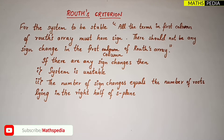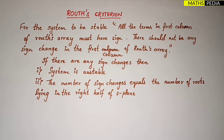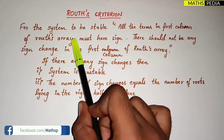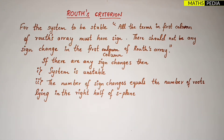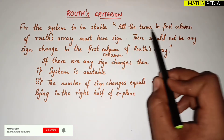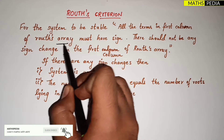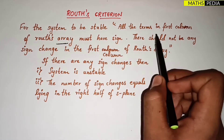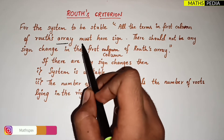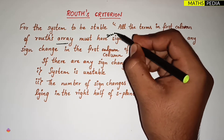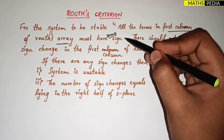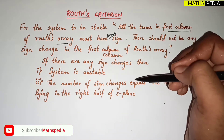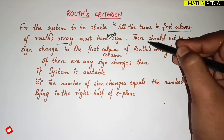In this video we will be discussing Routh's Criteria. For a given system to be stable, we need to determine whether the system is stable or not using Routh's Criteria. All the terms in the first column of the Routh array must have the same sign — if it is positive, all column elements should have positive sign. There should not be any sign change in the first column.